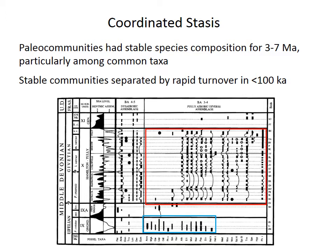Coordinated stasis is kind of like a community-level analog of punctuated equilibrium. This figure is based on a classic area for coordinated stasis, the Devonian of New York. Focus on these vertical columns of boxes — each one represents a species. Within this red rectangle, most species occur throughout the entire interval, but many are not found earlier in the blue box, and they're not found later. So species are persistent for quite a long time, but then there's a fairly rapid changeover, and then a different group of species are found.